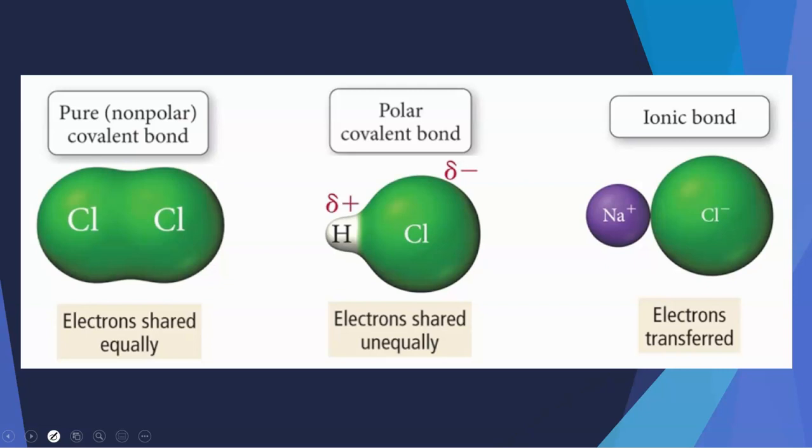I do want to point out that the more electronegative element atom is always going to have a partial negative charge, and the less electronegative atom will have a partial positive charge. The little symbols that you see on either end of this polar covalent bond, those are lowercase deltas. That little squiggly thing means that it is a partial charge. If it were a full positive or negative charge, we would just use the plus or the minus like we have in the ionic bond. But since it's not a full charge, it's a partial charge, we use that delta.